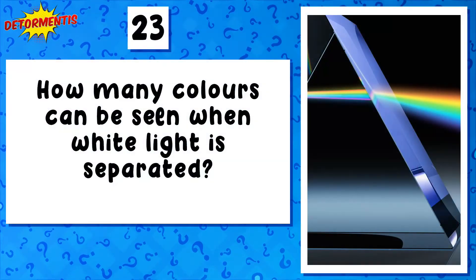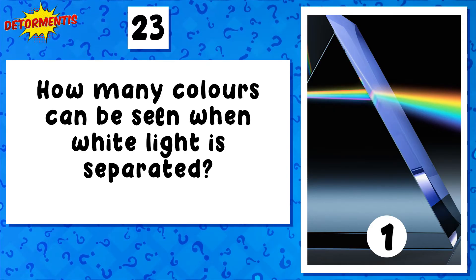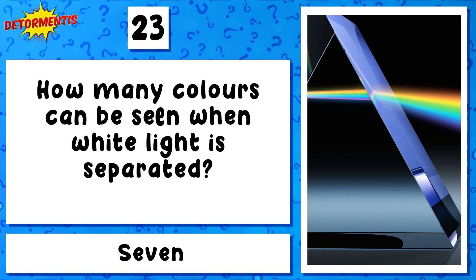Question 23. How many colors can be seen when white light is separated? Seven.